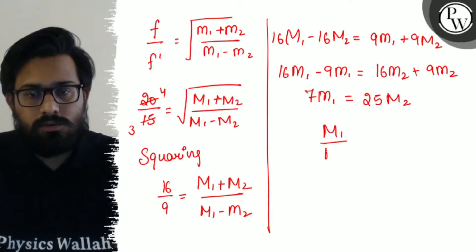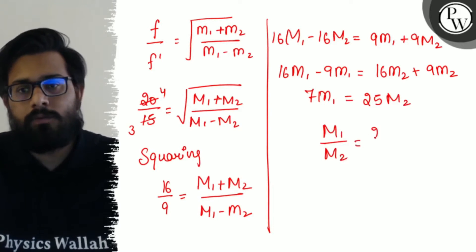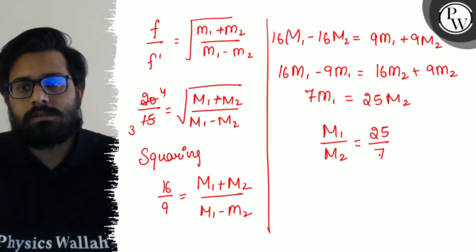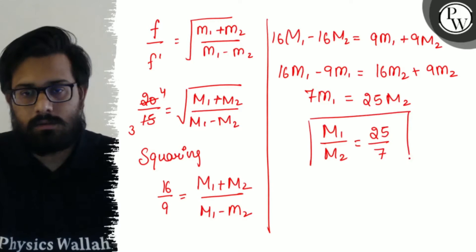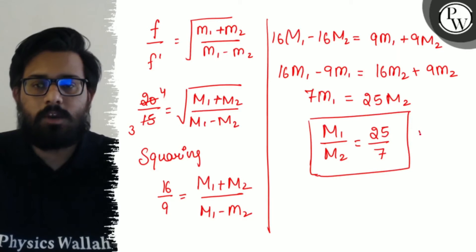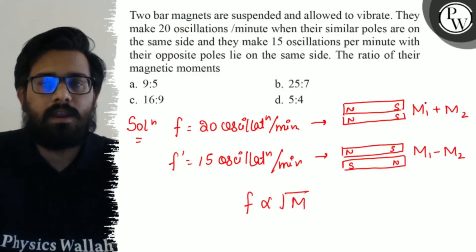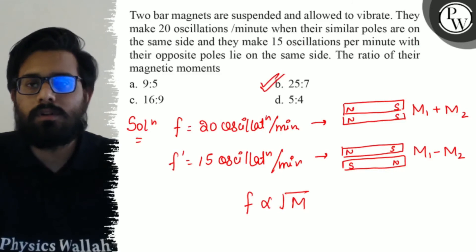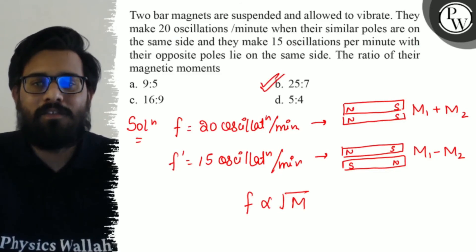M1 upon M2 ratio we find out, it comes out to be 25 by 7. So this is your final answer. The ratio of M1 by M2 comes out to be 25 by 7 which is option B, and hence option B is absolutely correct. So I hope you got the concept of this question and the very best.